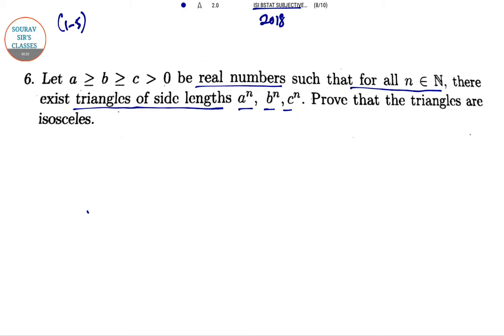First, we have to presume that the triangles are not isosceles, that is a > b > c. We are assuming this.